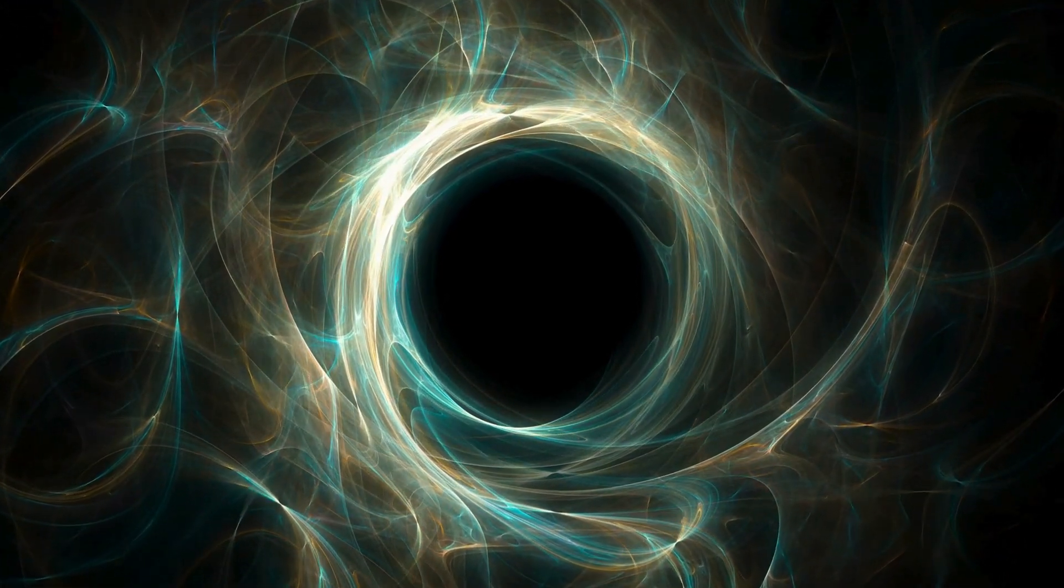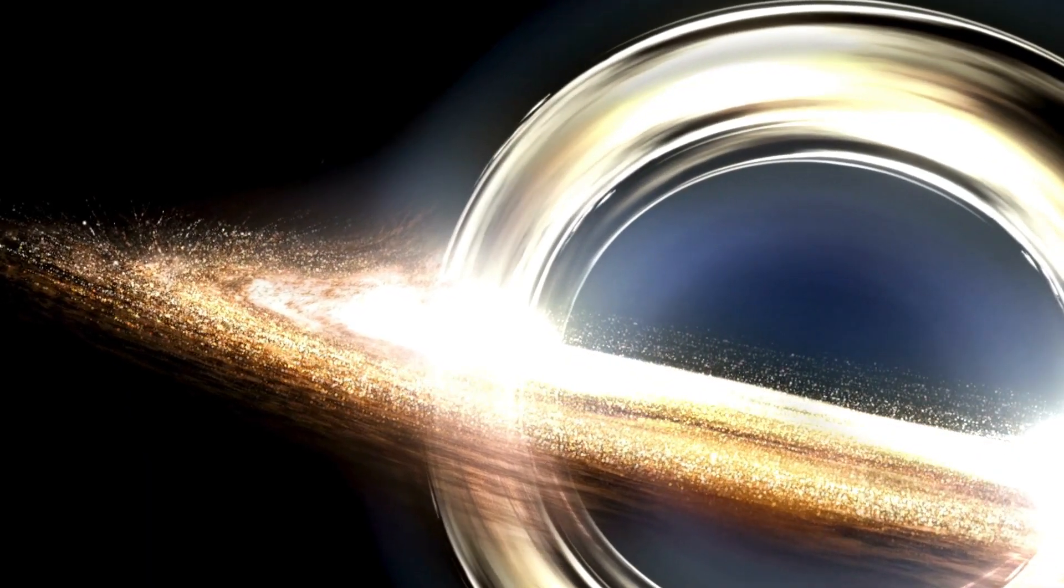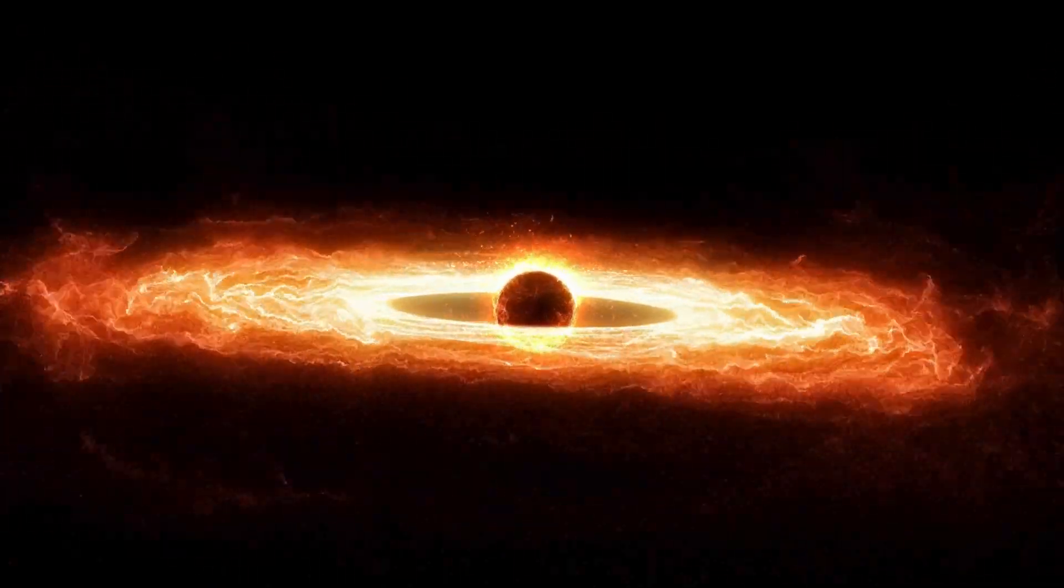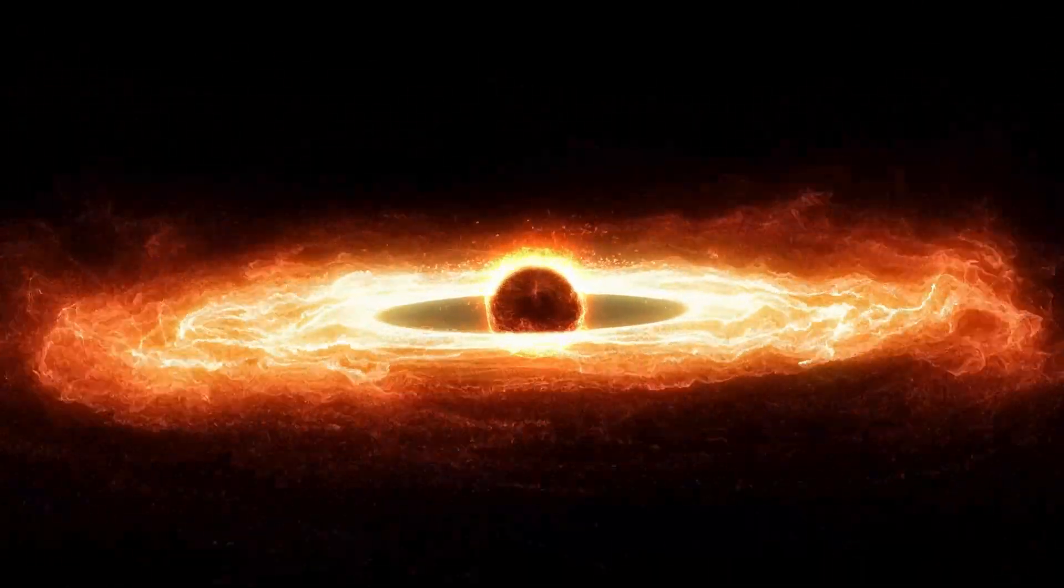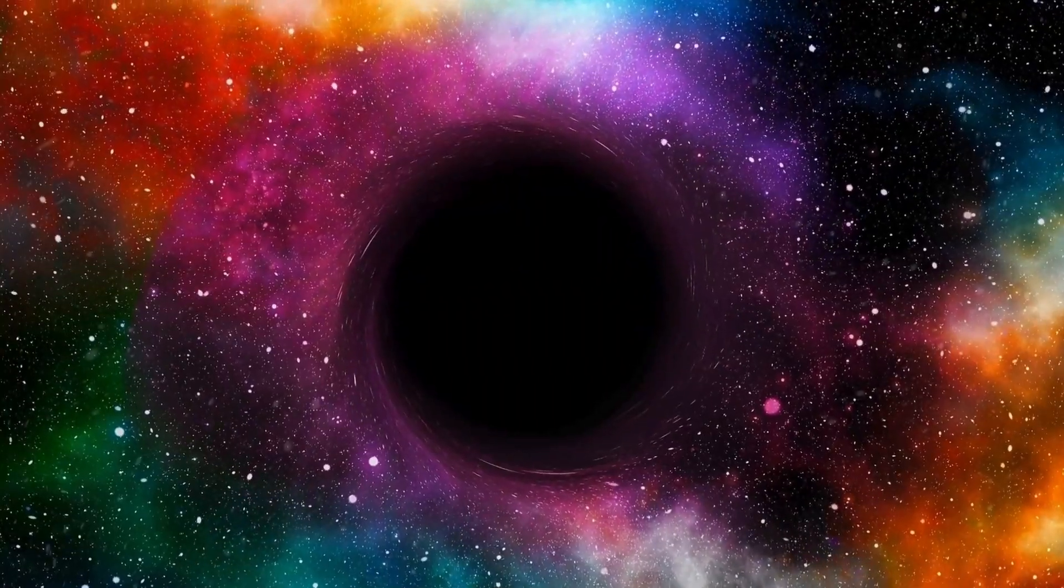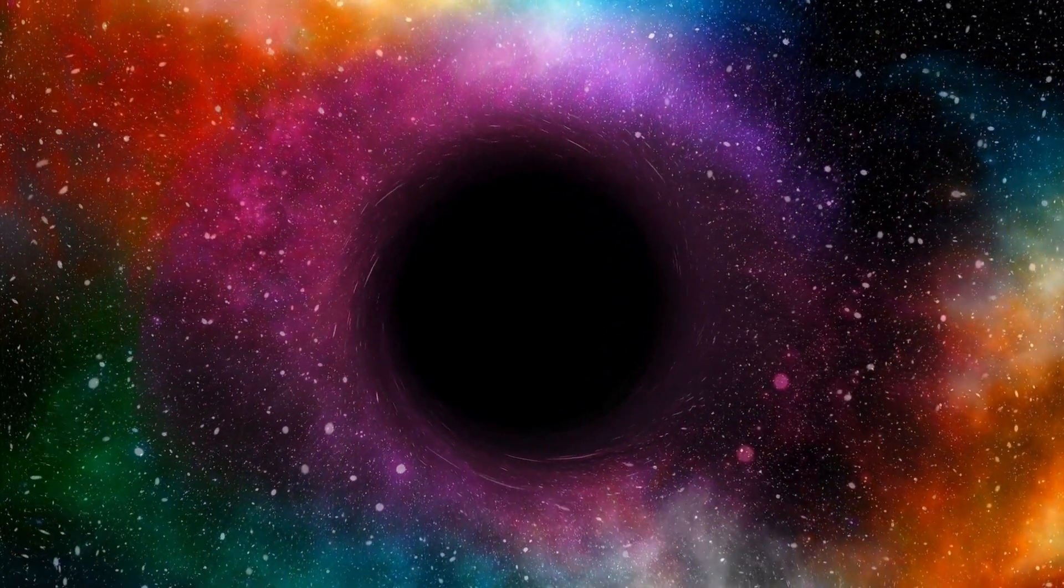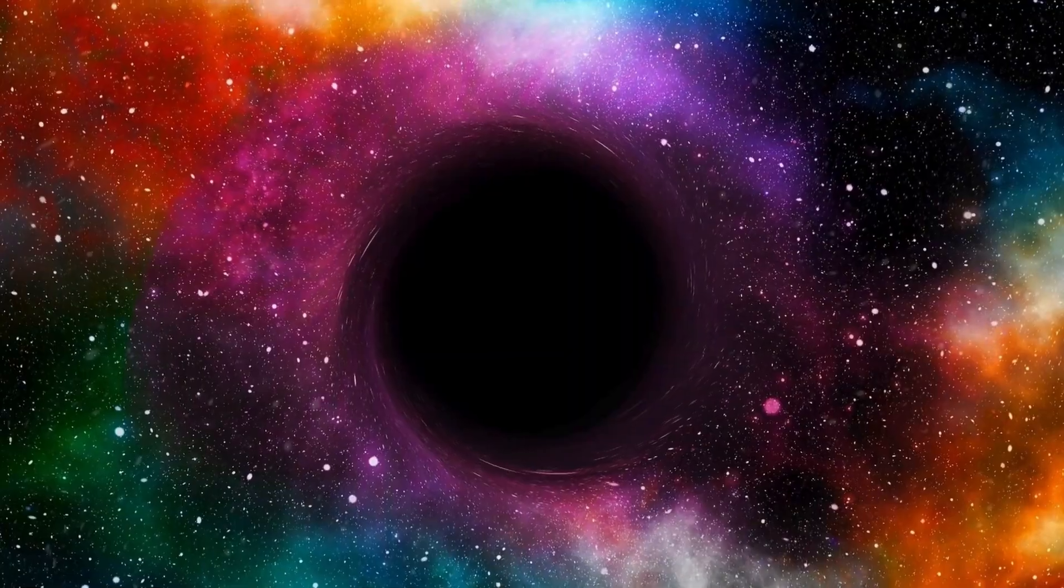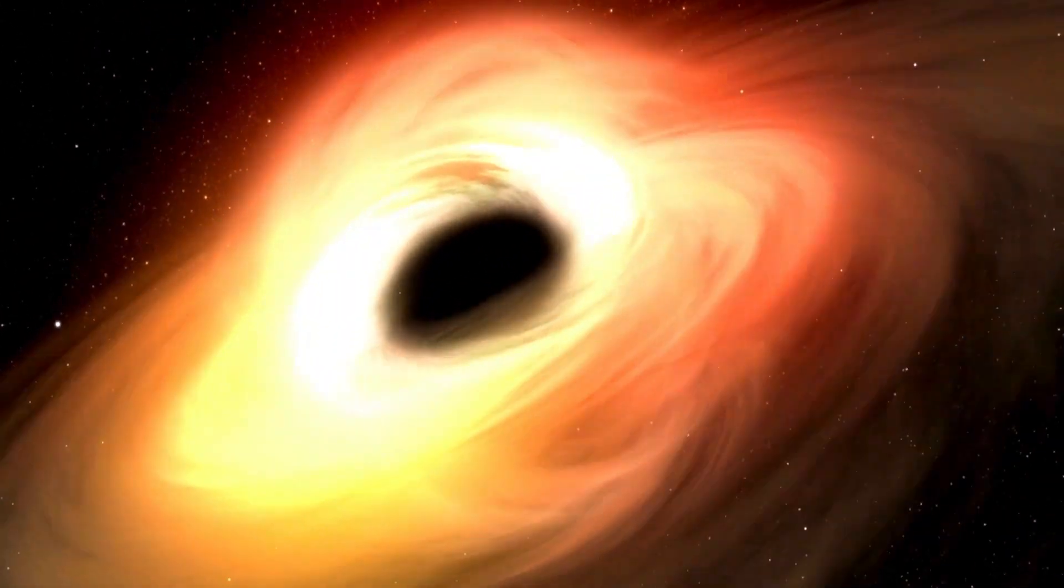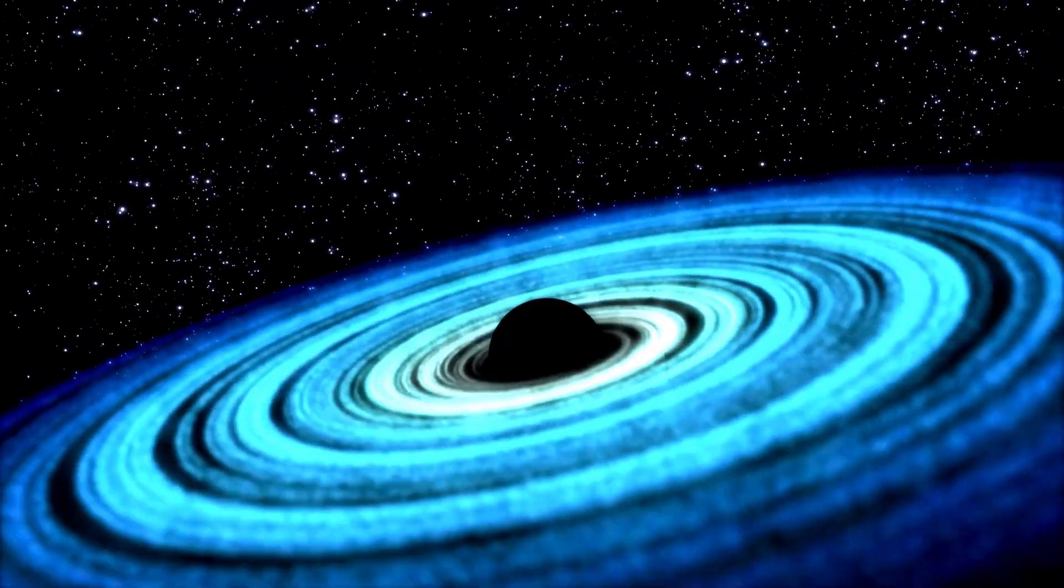As these massive stars collapse, something extraordinary happens near their surfaces—time itself begins to play tricks. From the perspective of someone far away, time appears to slow down near the event horizon, the point of no return for anything falling into a black hole. It's as if the star's clock ticks at a different speed compared to our own. Sometimes, when two smaller black holes collide, they merge to form an even more massive and terrifying black hole. If a black hole teams up with a neutron star, they create a cosmic phenomenon that defies comprehension.